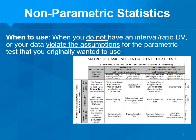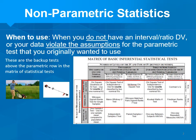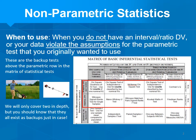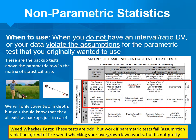Remember the matrix of inferential statistics. The bottom row is parametric, so the non-parametrics are the other two rows. The one directly above each parametric test is its backup test in case things go poorly. We're really only going to cover two of the non-parametric tests in depth, but you should know that these others exist as backups in case you get into a problem situation.